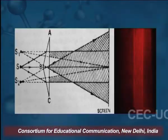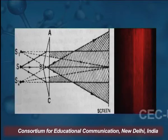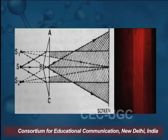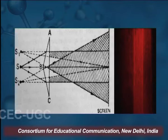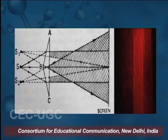On the screen we see the arrangement of the Fresnel Biprism, where light coming from the source falls upon it. When light passes from the upper part of the prism at the edge, it diverts towards the lower part of the screen and appears to come from virtual source S1. Similarly, when light passes from the lower part of the prism, it bends towards the upper part of the screen through the edge and appears to come from source S2.